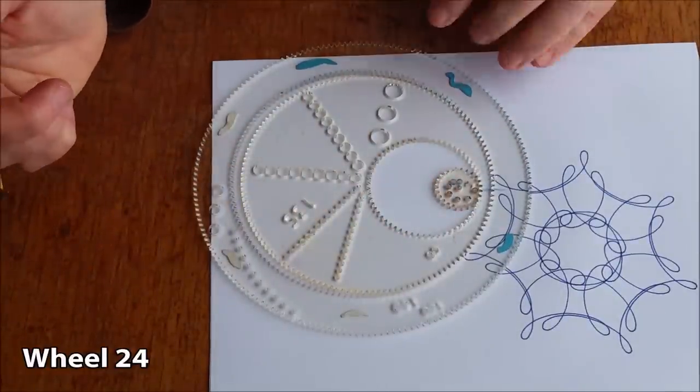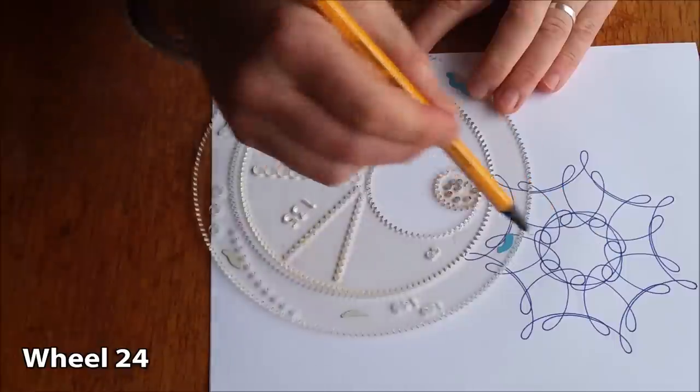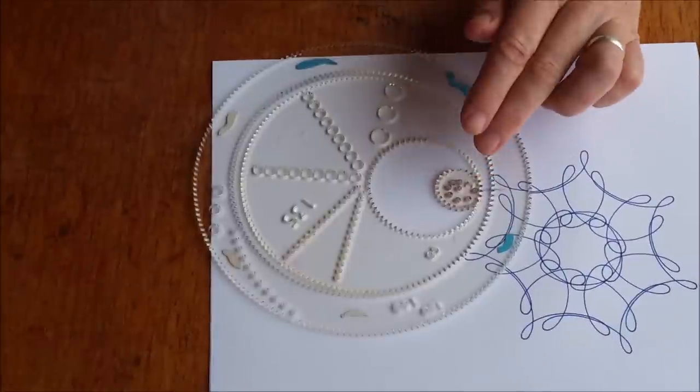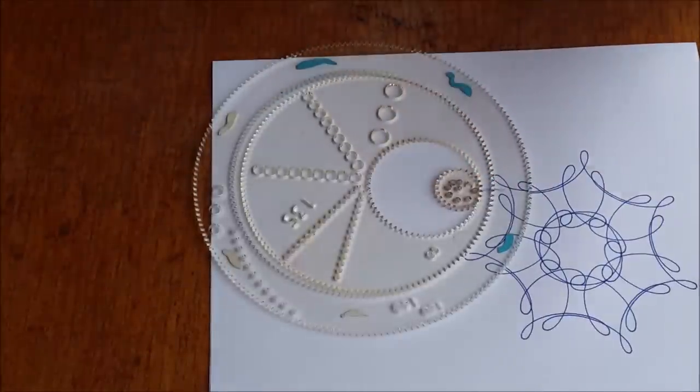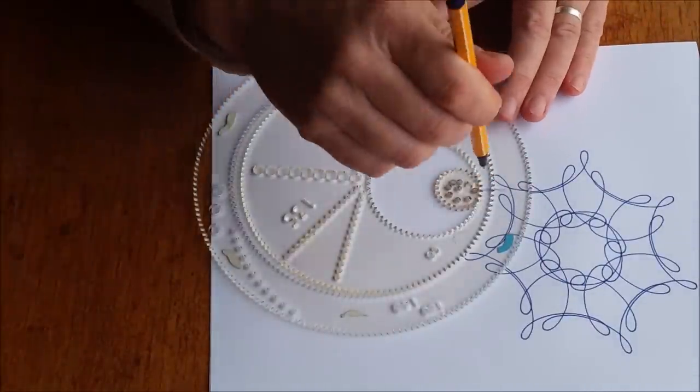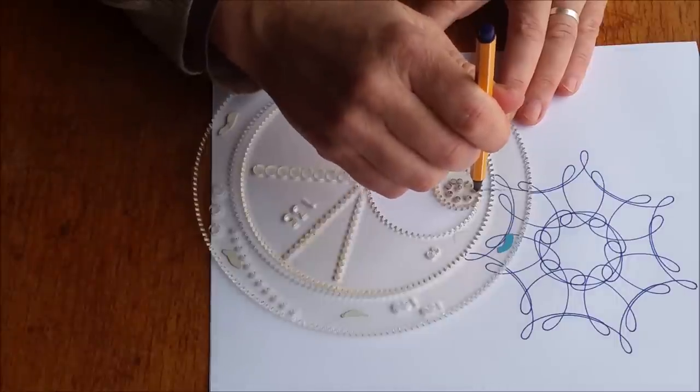And we'll see what it looks like compared to this design. So the inner wheel now is 24 and the other one was 48. So mathematically, you'd think there'd be some similarity between the two designs. So let's see what we get.